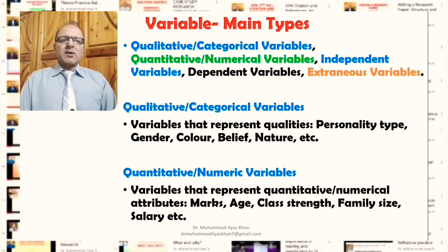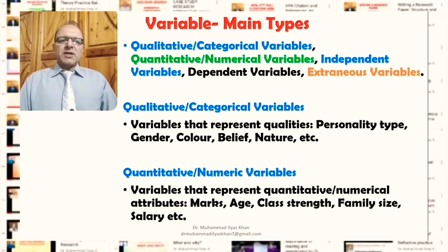Categorical or qualitative variables are variables that represent qualities of the phenomena or elements being studied. For example, personality type could be a quality used as a variable in a study of the relationship between personality and confidence or leadership. Similarly, gender, color, belief, and nature are examples of qualitative or categorical variables — each representing a certain quality.